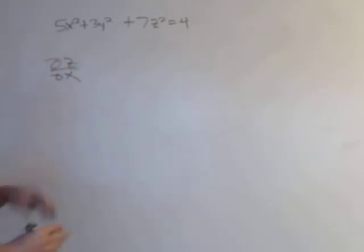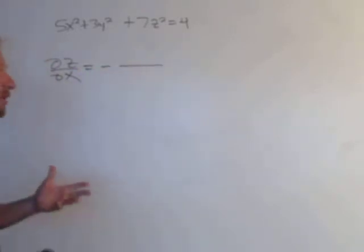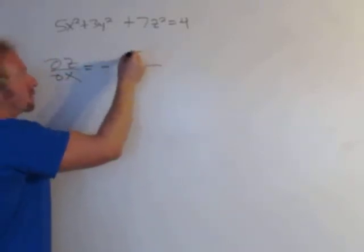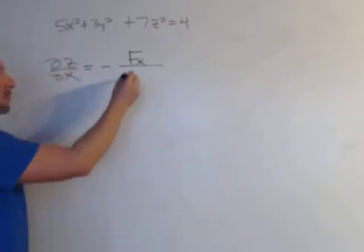So the formula for del z del x is minus and then it's a fraction. In the numerator you have the partial with respect to x and in the denominator you have the partial with respect to z.